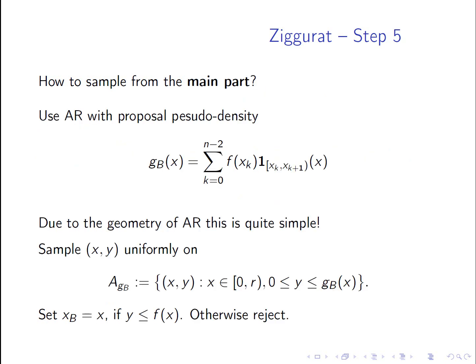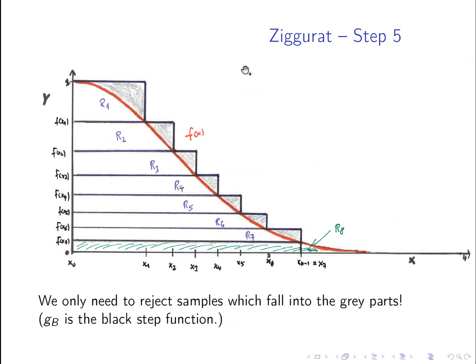Now step five. So what to do with the main part? Well, we didn't construct the Ziggurat for nothing. So let's skip a bit ahead to the sketch. So this is our Ziggurat here. And if you look at the black curve, the black curve dominates f of x. And f of x is the pseudo density from which we want to sample. So now we are doing an accept-rejection sampling. We generate a proposal under the black curve here. And we accept if the sample falls under f of x, under the curve of f of x. Then we accept the first coordinate and otherwise we reject and do it again.